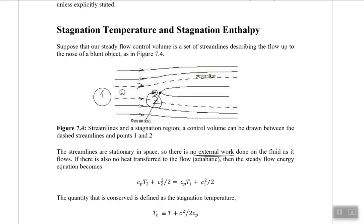There will be no external work done, because the streamlines are stationary. If the streamlines were not constant and there was some pressure coming from the sides, there would be external work on the object and it would be moving due to that work done. The assumption here is a steady flow with constant streamlines.